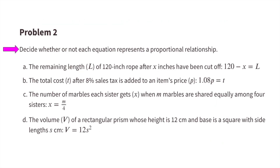Number 2: Decide whether or not each equation represents a proportional relationship. Part A: the remaining length of a 120-inch rope after x inches have been cut off is given by 120 minus x equals L. This subtraction sign tells me that it's not going to be a proportional relationship.